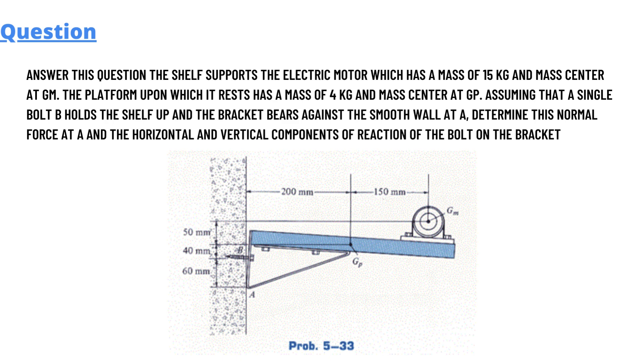The platform upon which it rests has a mass of 4 kg and mass center at the GP. Assume that a single bolt B holds the shelf up and the bracket bears against the smooth wall at A.